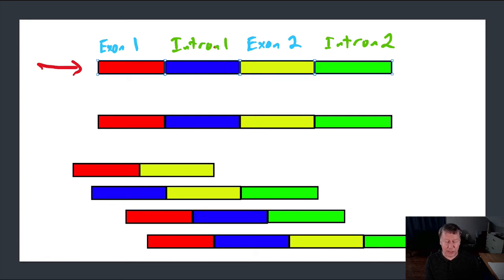If I were to take, this is my pre-mRNA, and I were to remove the introns, I would produce this mRNA, which would ultimately make this protein that would have the red exon and the yellow exon.